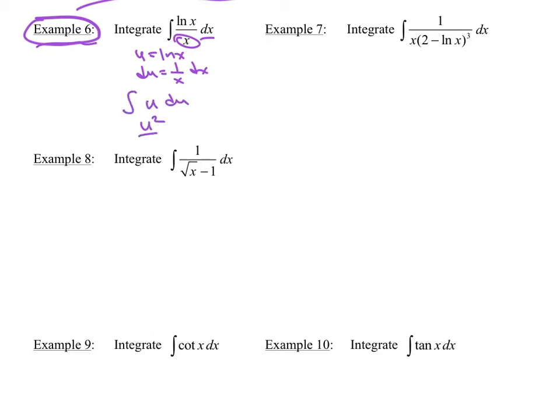So then this substitution just becomes u du. So when I do the anti-derivative, this is u squared over 2 plus c. Do a back substitution, and this is going to be ln x quantity squared over 2 plus c. Now this one right here, don't try to do the plug rule or pull that out in front, because that 2 has to be on x, not on ln x. So in other words, this is done as it is.